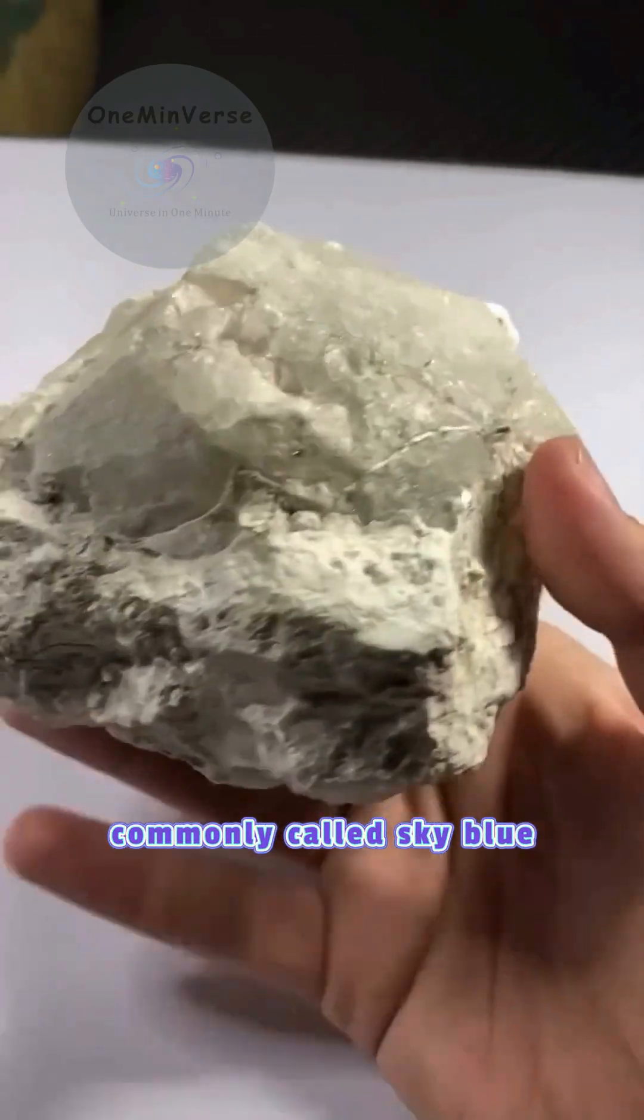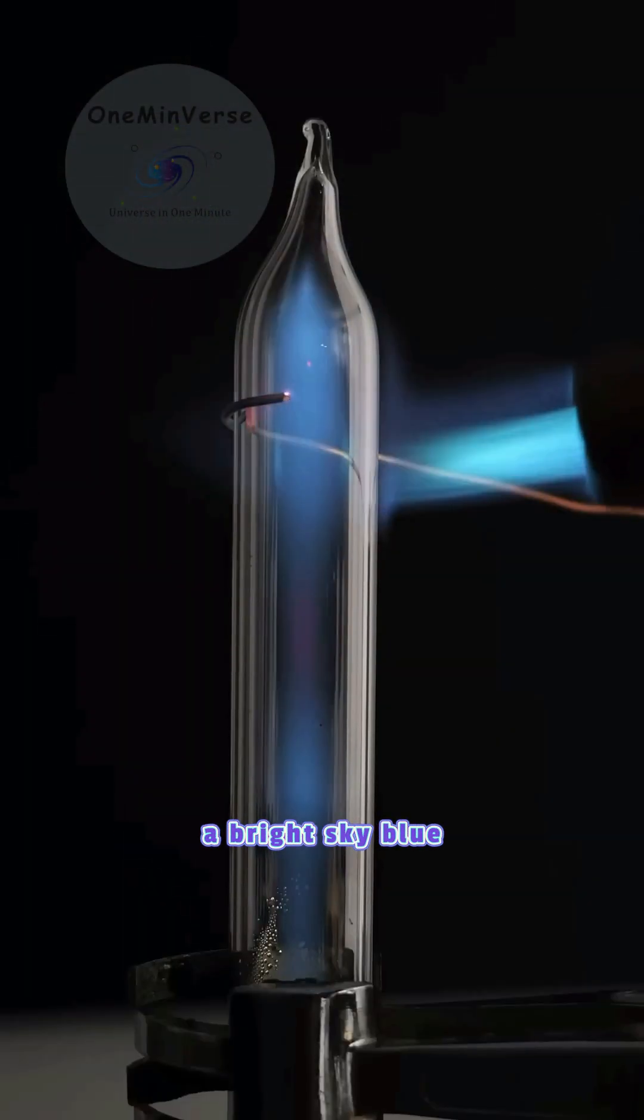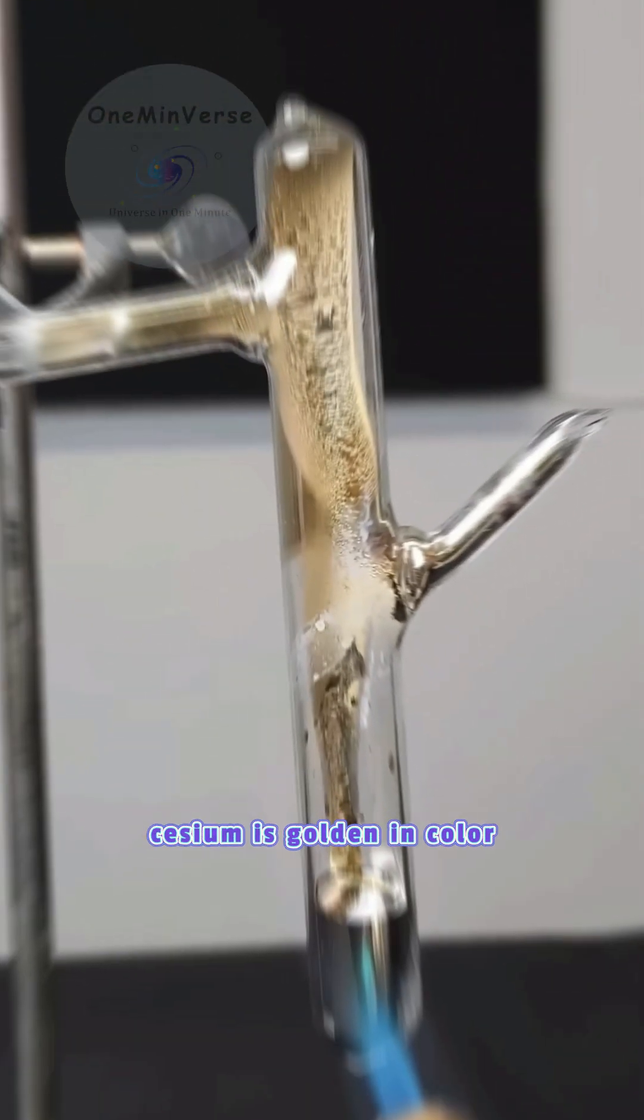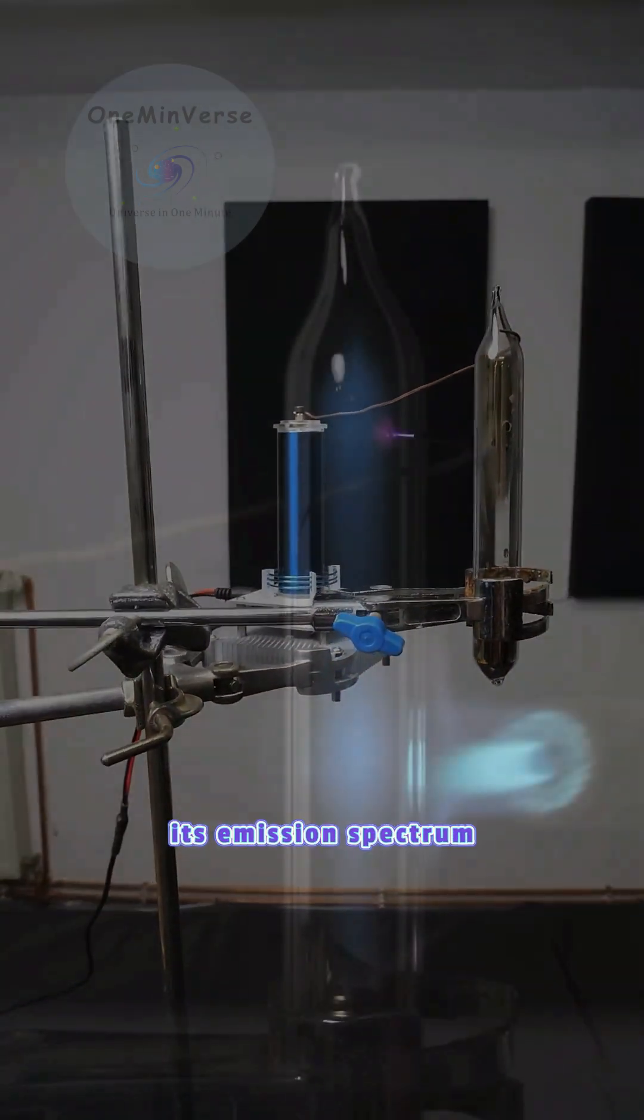Cesium itself is commonly called sky blue, because when heated, this metal will emit a bright sky blue spectrum line. Although in its metallic form, cesium is golden in color, sky blue itself refers to the nature of its emission spectrum, not to its physical appearance.